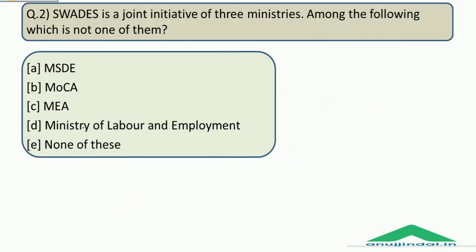The next question is also based on the Swadesh initiative: Swadesh is a joint initiative of 3 ministries; among the following, which is not one of them? The Ministry of Skill Development and Entrepreneurship is there, the Ministry of Civil Aviation is there, and the Ministry of External Affairs is there. The Ministry of Labour and Employment is not there. Therefore the correct answer is Option D — Ministry of Labour and Employment.